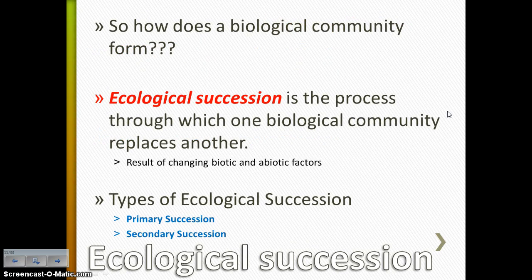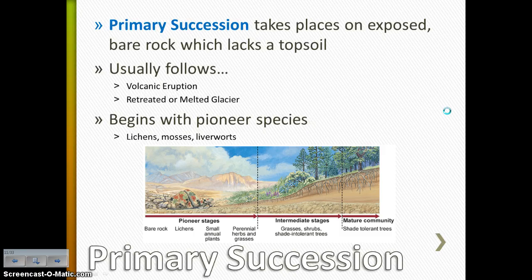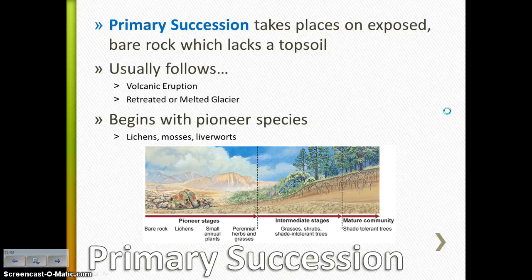So where do these biological communities come from? They come from a process called ecological succession. This is a process where you replace one biological community with another, and this is a result of the changing factors — both biotic and abiotic — in an ecosystem. There are two types of ecological succession: primary succession and secondary succession. Primary succession takes place when you have newly exposed rock which does not have topsoil — that usually happens after a volcanic eruption or when a glacier melts or retreats.